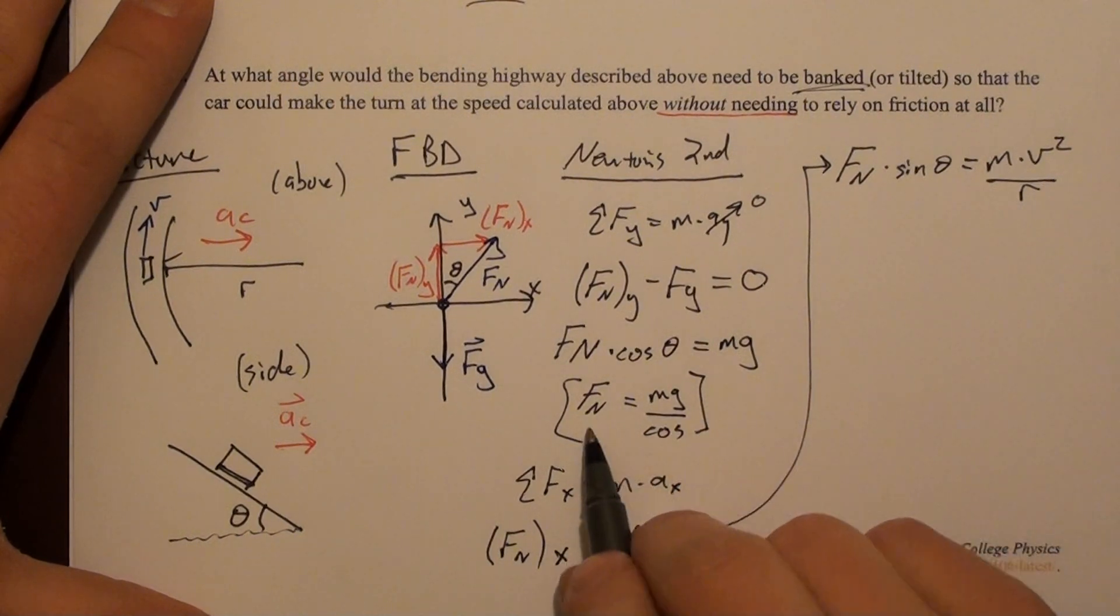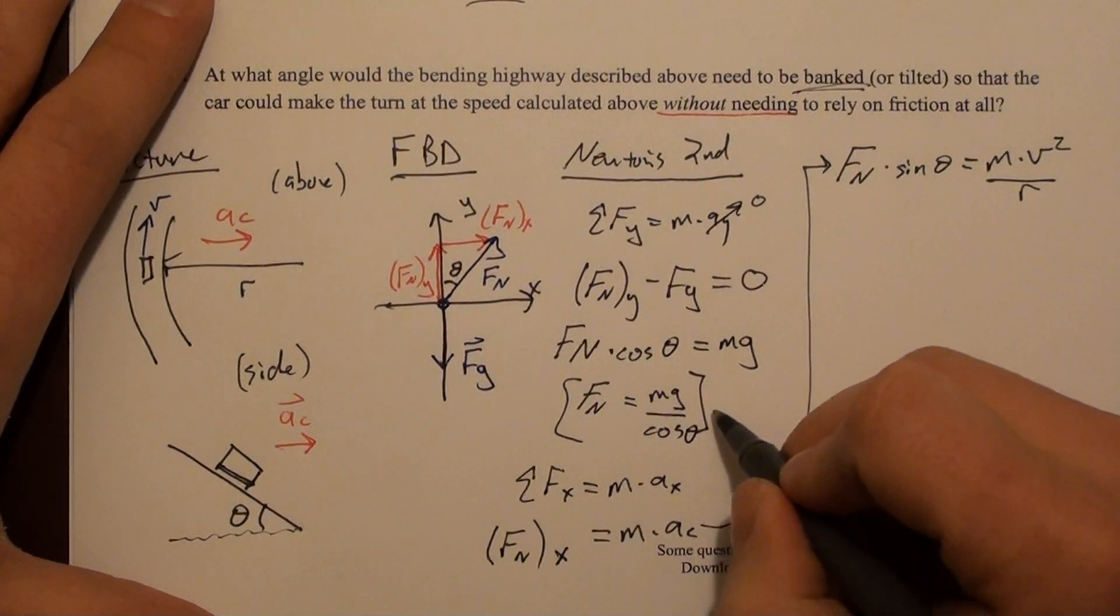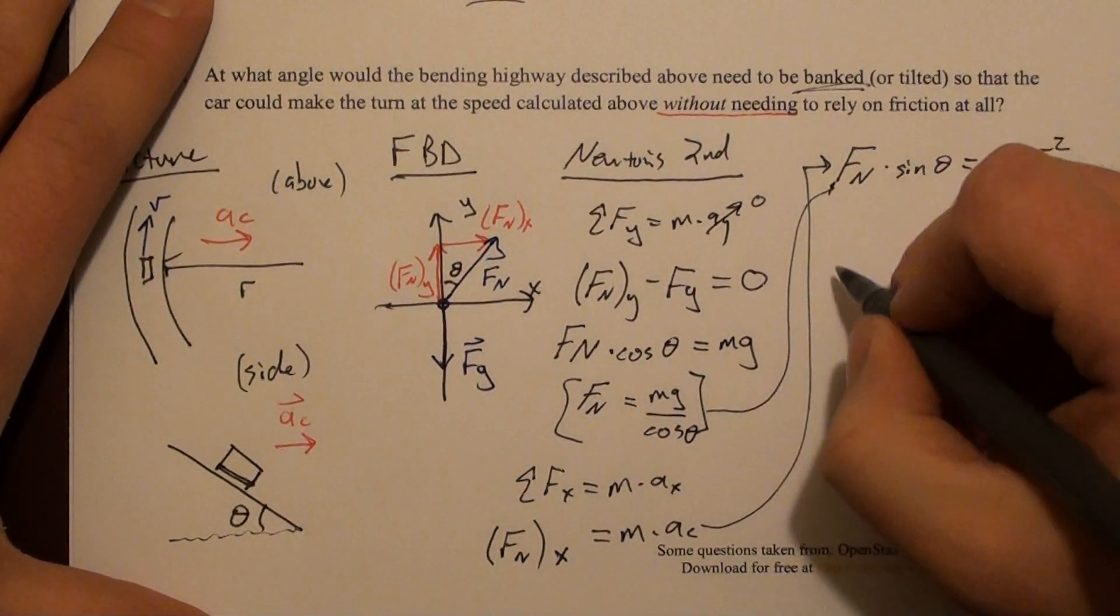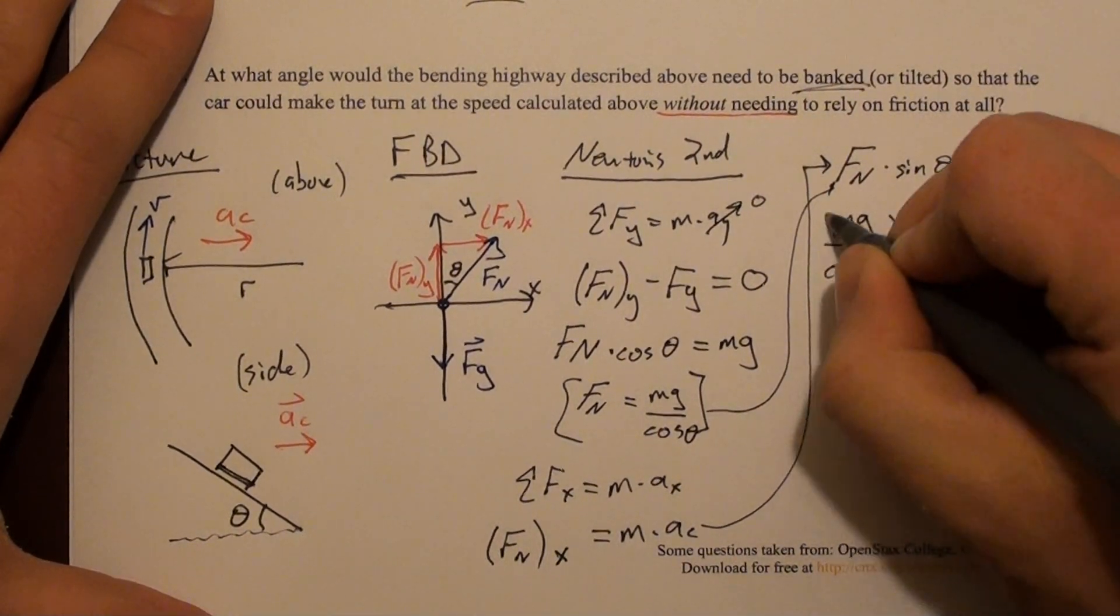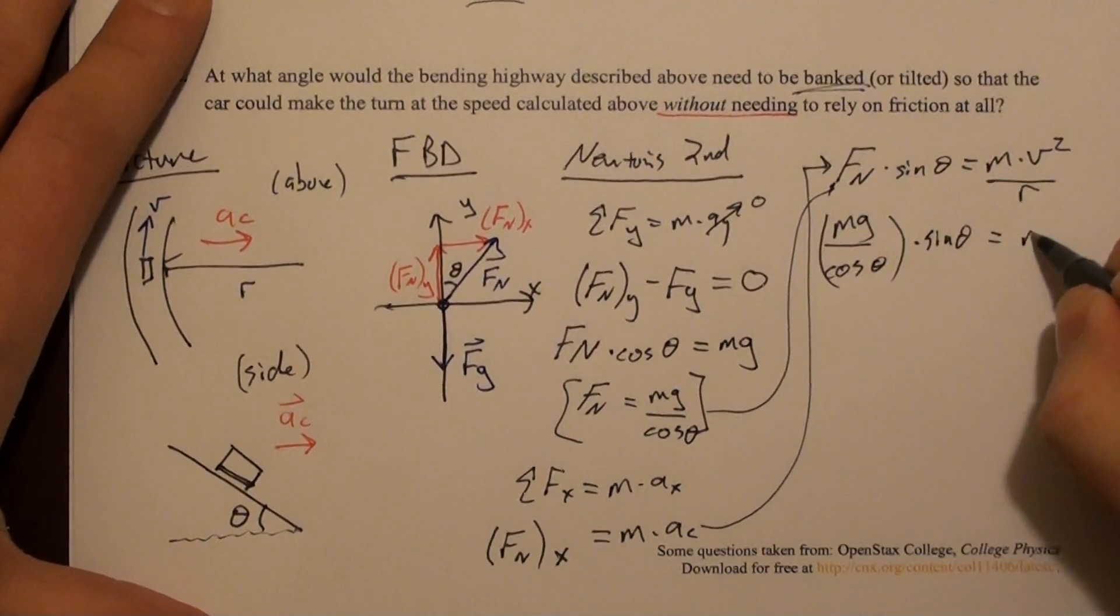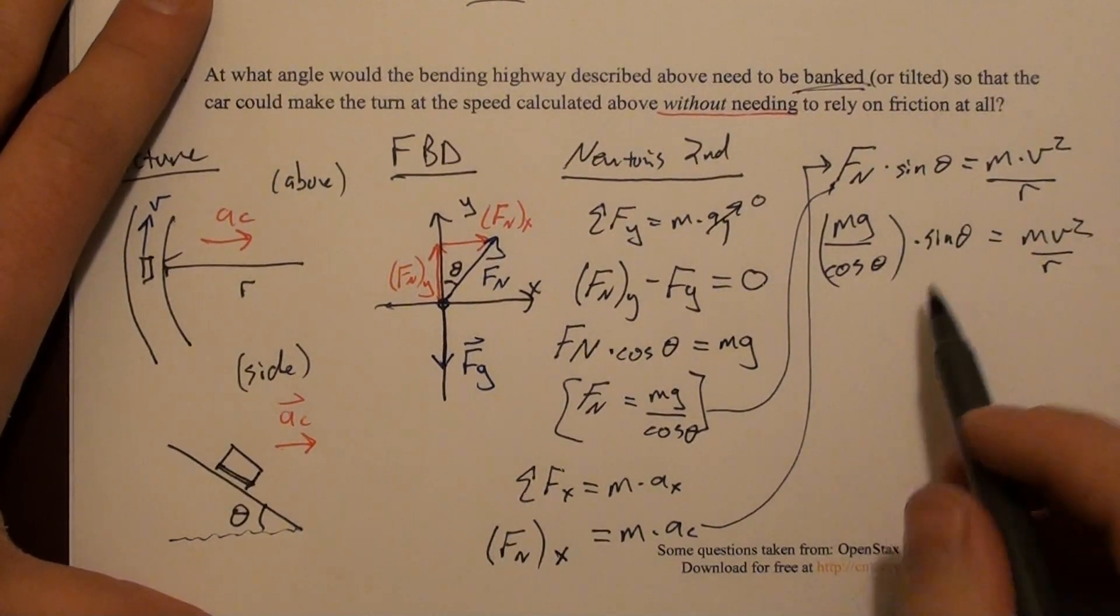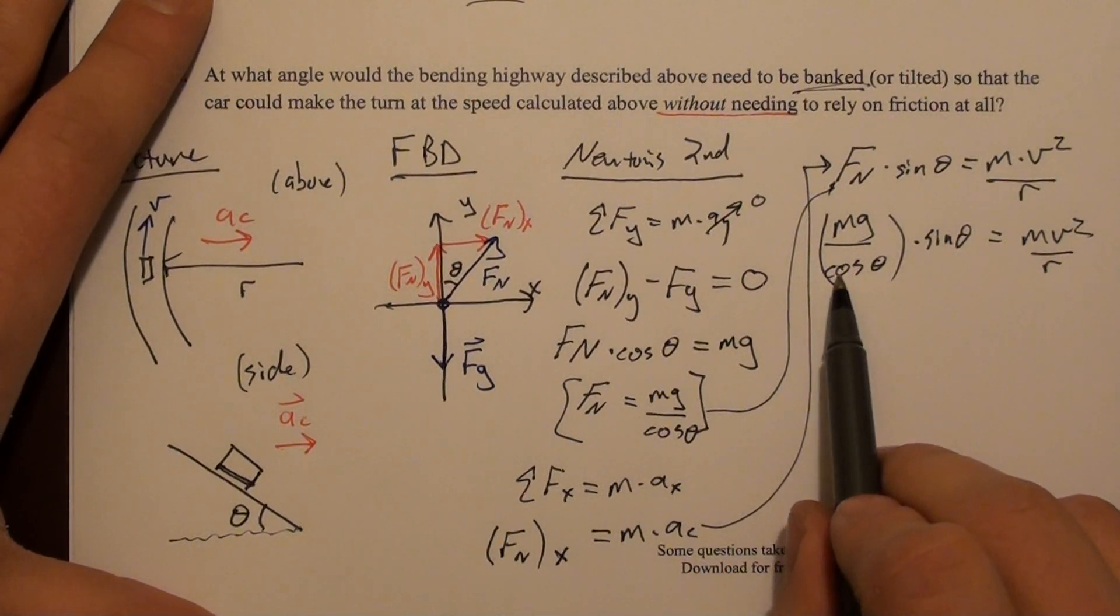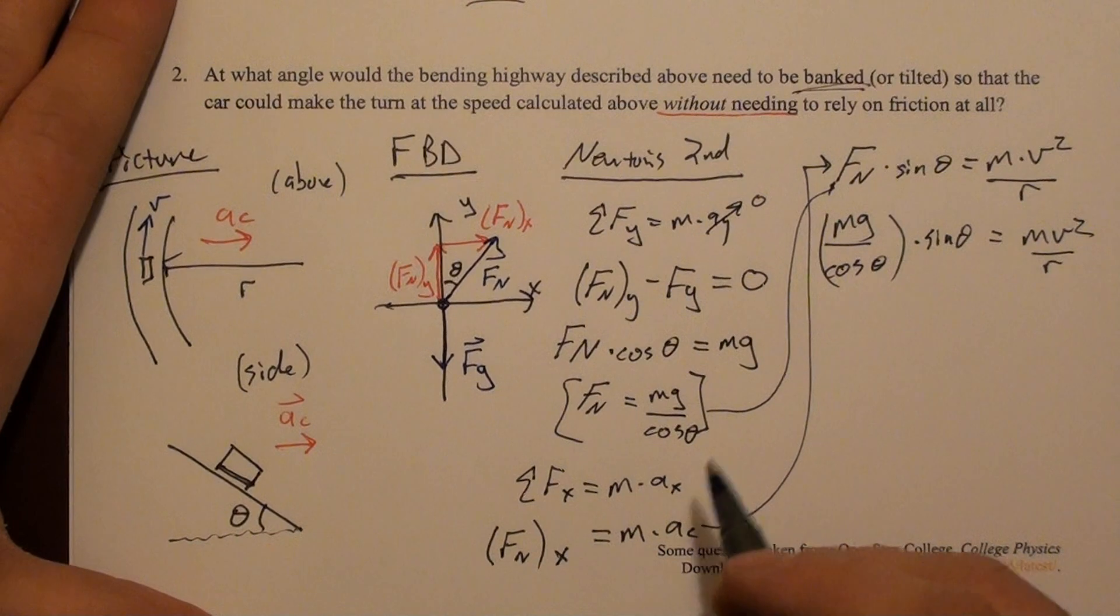At this point, I've already solved for the normal force in terms of mg and cosine θ. So I can plug that in here. That's mg divided by cosine θ times sine θ equals mv² over r. And if you remember your trig, sine over cosine is tangent.